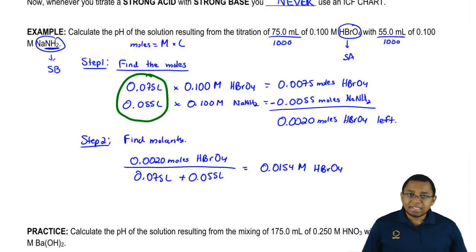And remember, since this is a strong acid, to find pH, we don't need to do an ice chart. Since it's a strong acid, just take the negative log. Negative log of a strong acid will give me my pH.